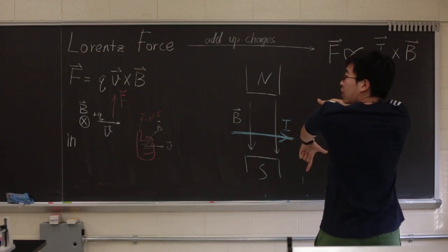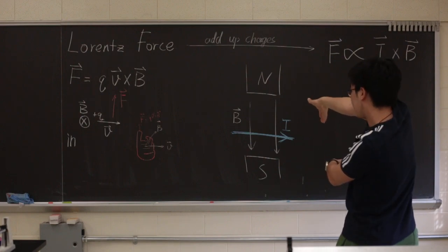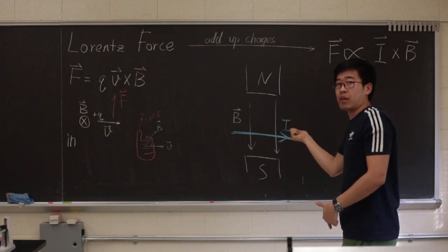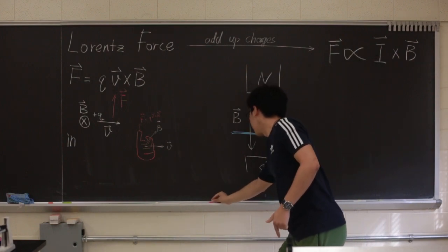So I cross B. So first across I, and then across B, your thumb, which is pointing in the direction of the force.